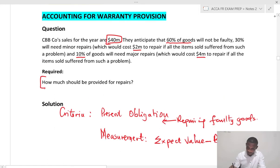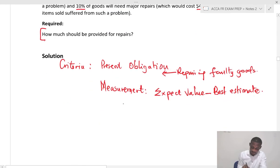Now we are told that they anticipate that 60% of goods will not be faulty. However, 30% will need major repairs which will cost 2 million. So we are looking at the fact that if 60% will not be faulty, then it means that 60% of the goods will require no cost. So we are looking at 0.6 times 0 dollars.